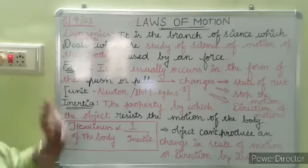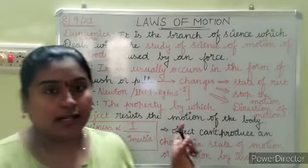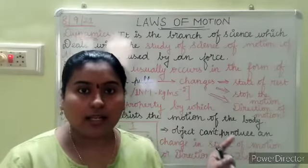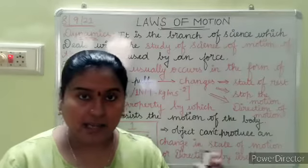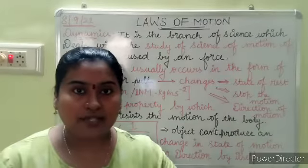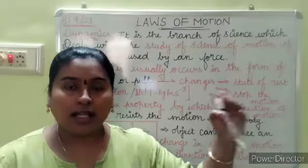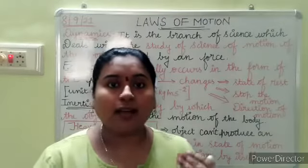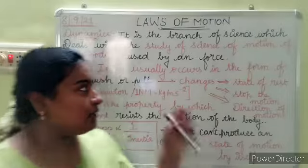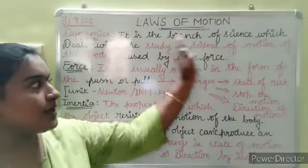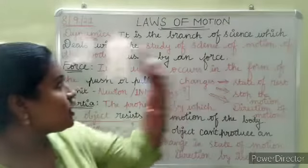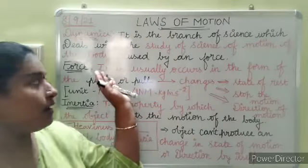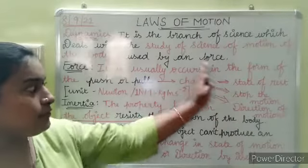The first definition is dynamics. What is dynamics? It is a branch of science — specifically a branch of physics. Physics, chemistry, botany, zoology — dynamics is a branch of physics which deals with the study of the motion of a body caused by force.